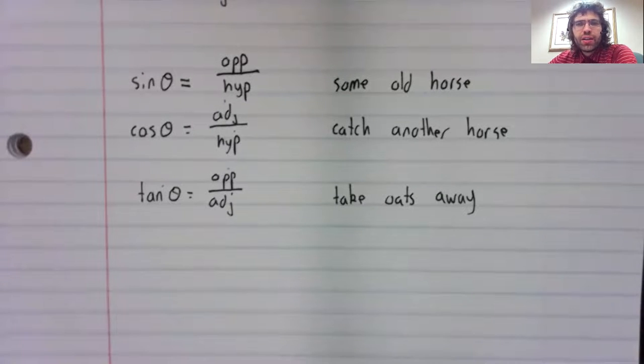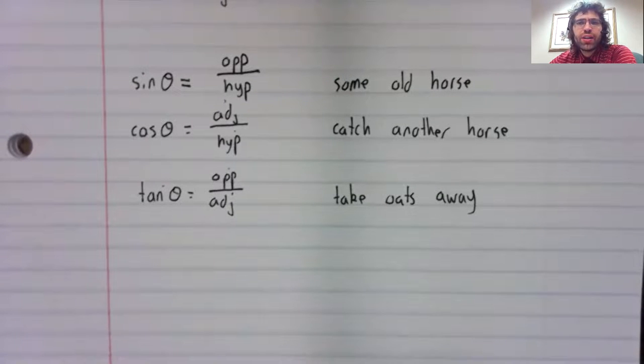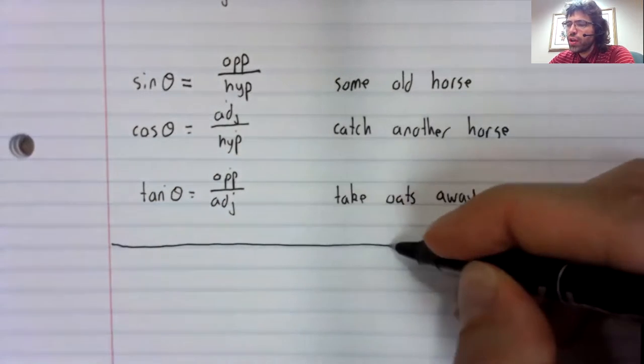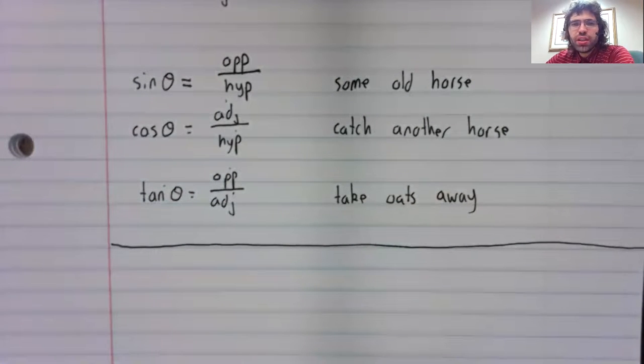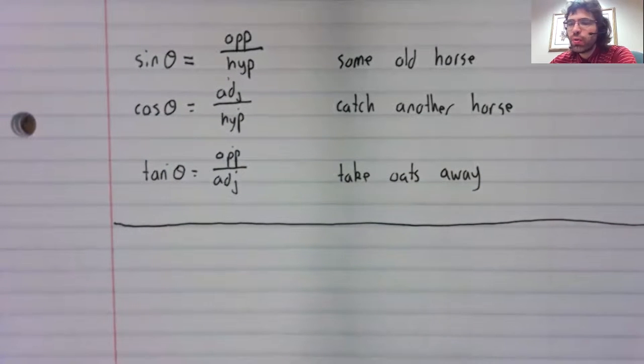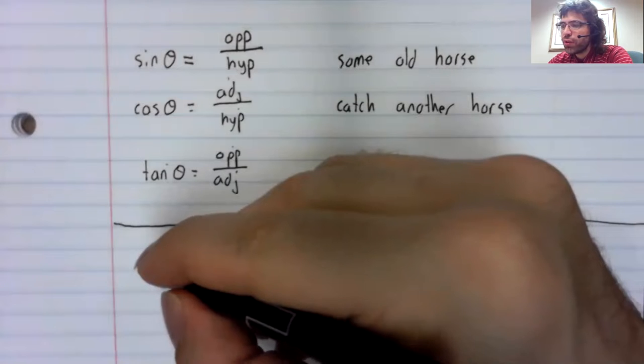You can define the other three trig functions in terms of the right triangle. We don't normally do that, and there is no clever memory aid for it.